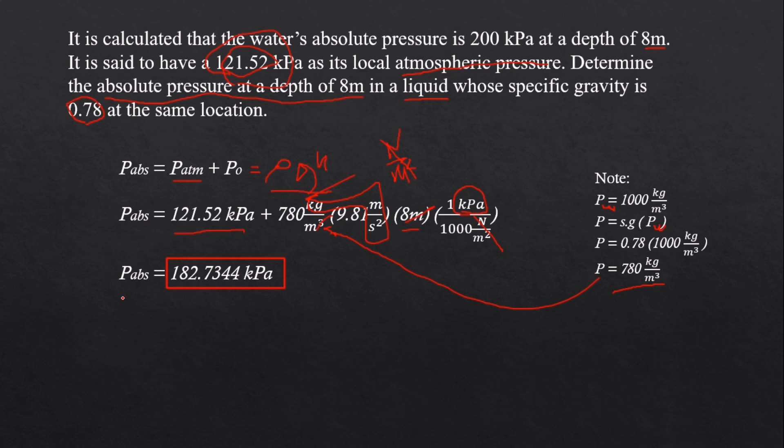So in this given problem, the absolute pressure at the depth of 8 meters in a liquid with specific gravity of 0.78 at the same location is 182.7344 kilopascal.